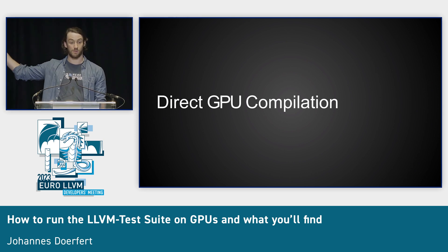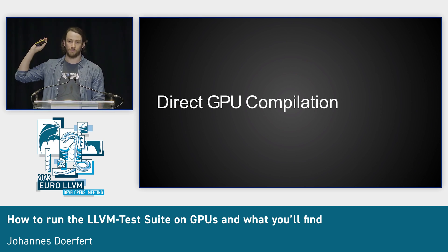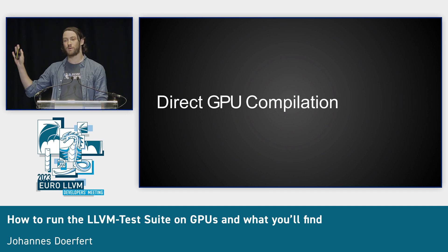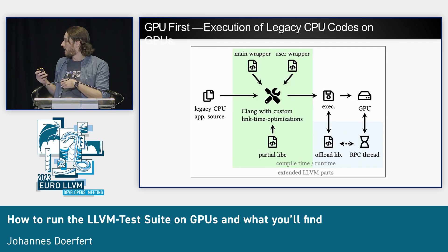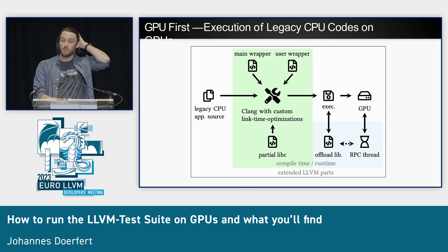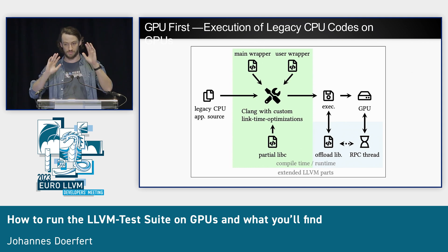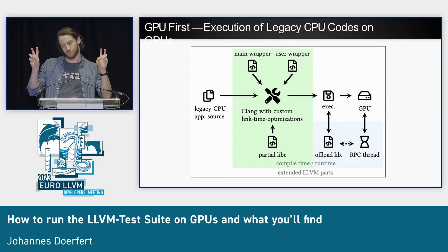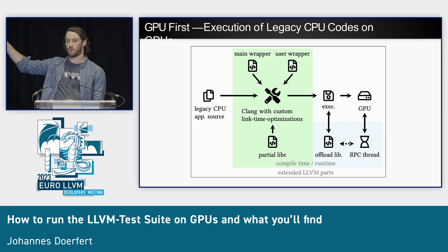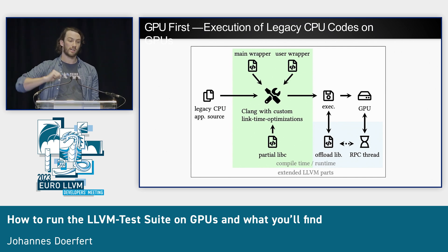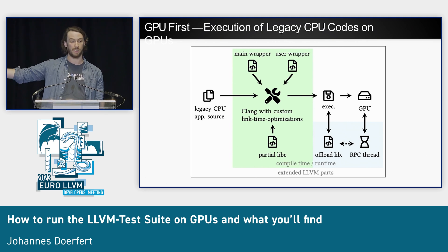Last year at LLVM Dev, Shile, who did all the work I'm just presenting, presented about this, and people were not super into it, but I think it was just miscommunicated. So what happens is you take a legacy CPU code, any code, you compile it with our modified client, and what falls out is an executable that will execute your legacy CPU code on the GPU entirely. It will call main on the GPU.